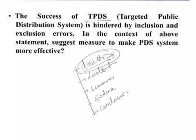The key terms here are TPDS, which is hindered by inclusion and exclusion errors, and the question is asking us to suggest measures to make the PDS system more effective. So the key terms are TPDS, inclusion and exclusion errors, and measures.